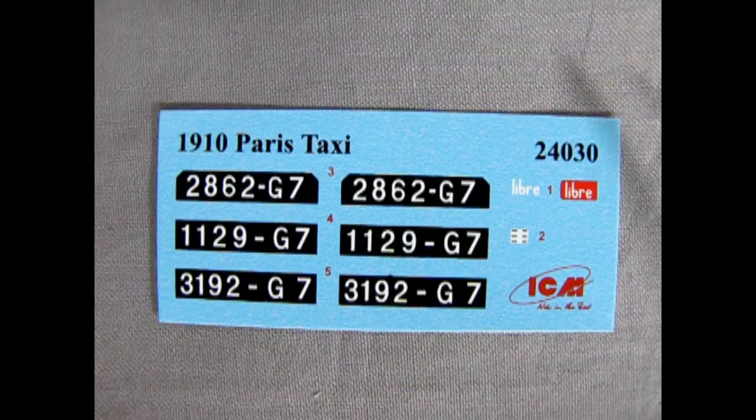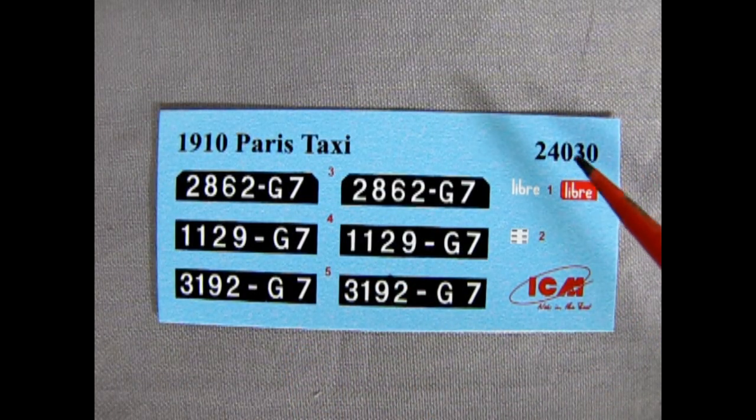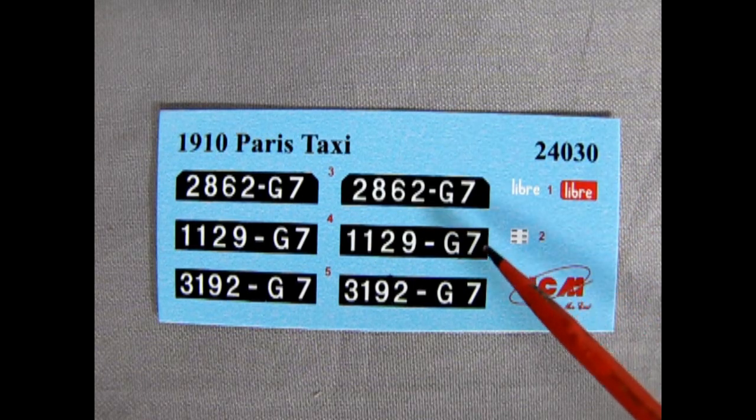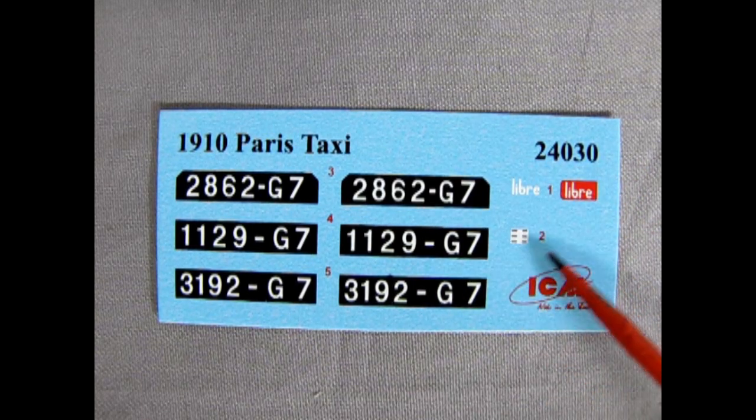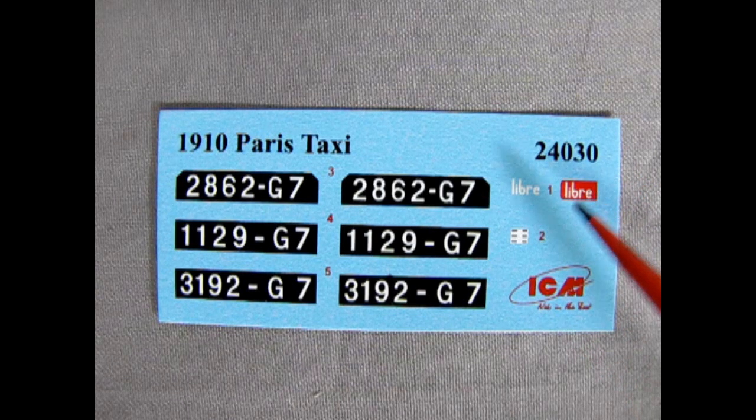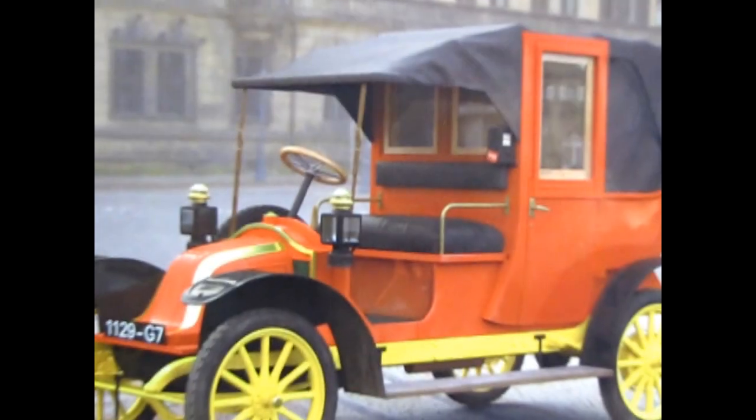Here we have the decal sheet for our ICM 1910 Paris taxi. As you can see, we have three different license plates, as well as decals for our meter box. And that completes our look at ICM's Type AG 1910 Paris taxi model car kit.